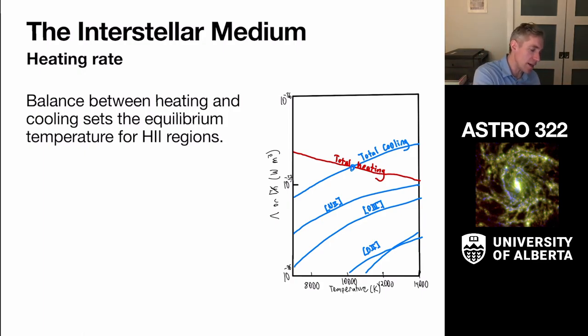And so what happens here is we get a balance between the heating and the cooling. And under certain conditions, we sort of have this equilibrium point where the heating rate equals the cooling rate. And that gives us the thermodynamic equilibrium point of the ISM.